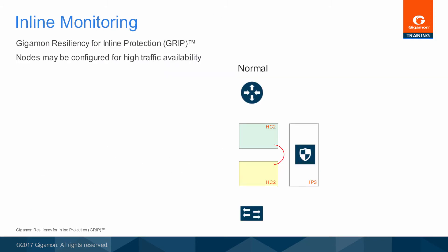A redundant arrangement of two GigaVUE HC2 nodes can maintain traffic monitoring by inline tools when one of the nodes is down. With the Gigamon Resiliency for Inline Protection, or GRIP feature, a bypass switch deployment in series can ensure continued traffic inspection. Specifically, if one GigaVUE HC2 node were to lose power, then the second GigaVUE HC2 would take over sending inline traffic for inspection.